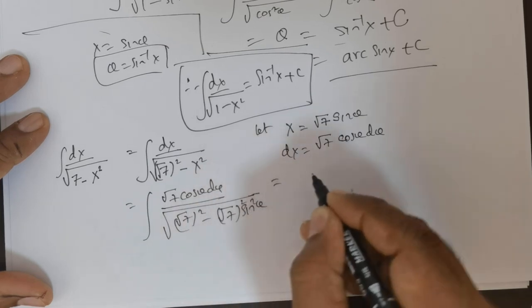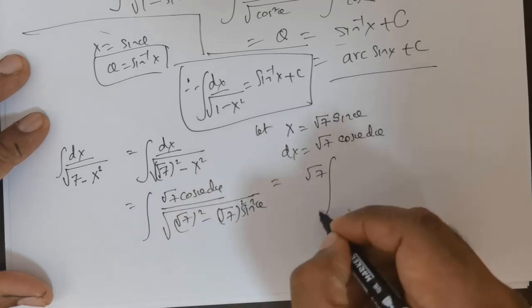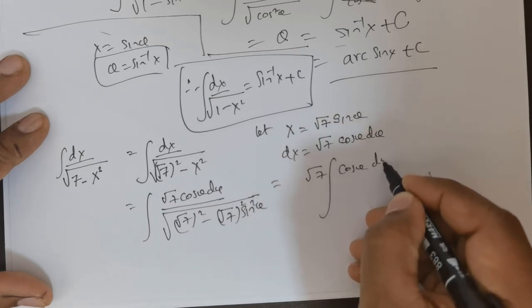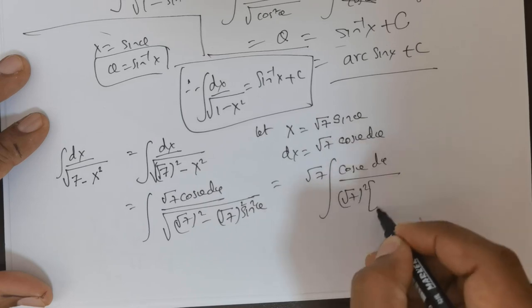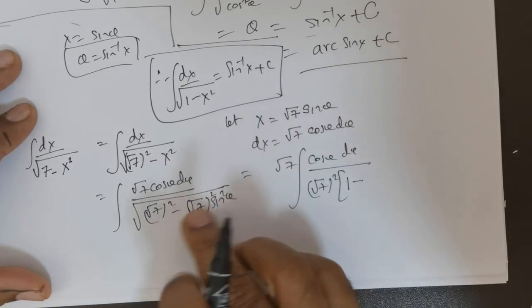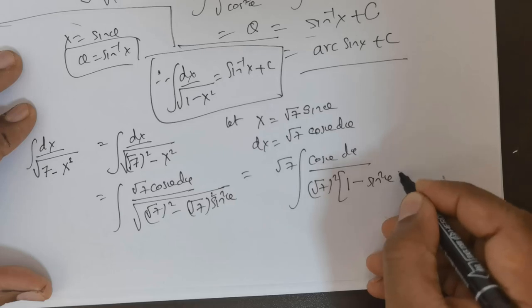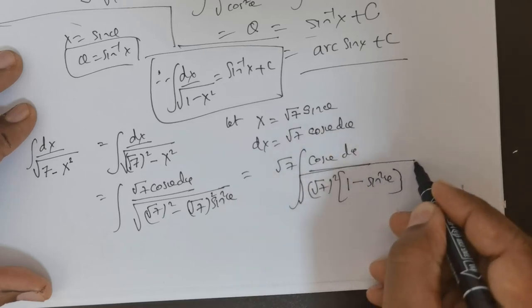So this can be written as root 7 times cos theta d theta divided by - now root 7 squared, you can take that out, that would give you 1 minus sin squared theta. Everything is present inside the square root.